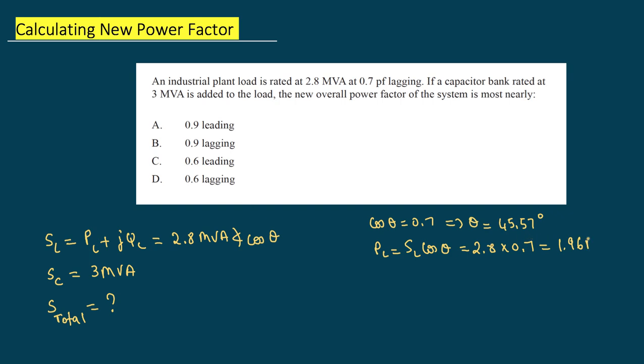For Q_L, same thing: S_L sine of theta. So this is 2.8 times cosine of 45.57, and plug that into the calculator, we have 2 MVAR.